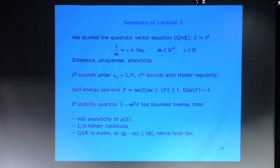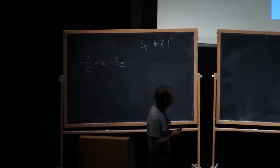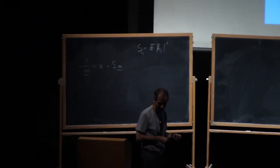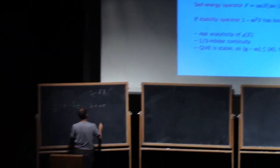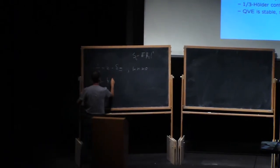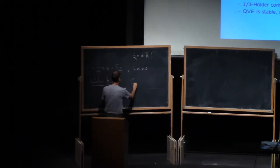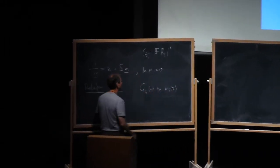The input of that equation is a symmetric matrix S with non-negative entries, and we looked at the equation: -1/M = Z + SM, where M is an N-vector of complex numbers, all in the upper half plane H. Z is a spectral parameter, also a complex number in the upper half plane. The relation to random matrices is that G_ii, the diagonal matrix elements of the resolvent, was supposed to be close to the i-th component of the solution of this equation.